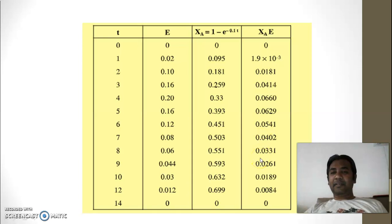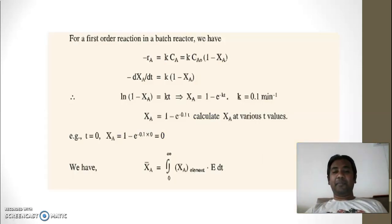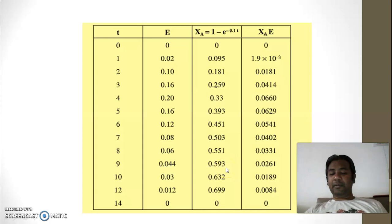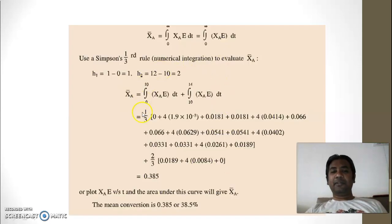So this last column will be now plotted against time. Because this formula clearly indicates if you want to find average conversion you have to plot a graph of XAE versus T. So either you can use numerical technique or you can plot a graph. And at the end you will get result 0.385. So this is what your average conversion is.